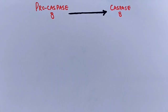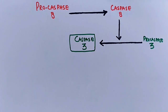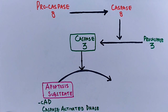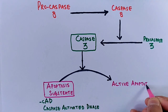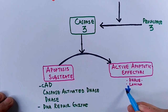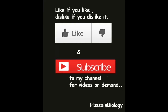After conversion of pro-caspase 8 to active caspase 8, this active caspase 8 converts pro-caspase 3 to its active form, caspase 3. Caspase 3 in turn activates apoptotic substrates — including caspase-activated DNase and nuclear lamina enzymes — that degrade the cell. These effectors enter the nucleus, leading to programmed cell death: apoptosis, with characteristic DNA degradation and membrane blebbing.